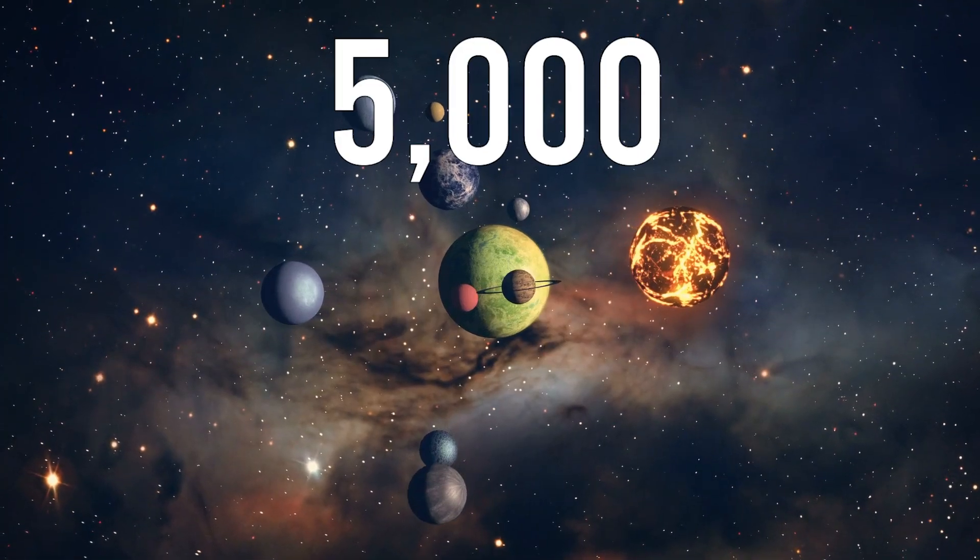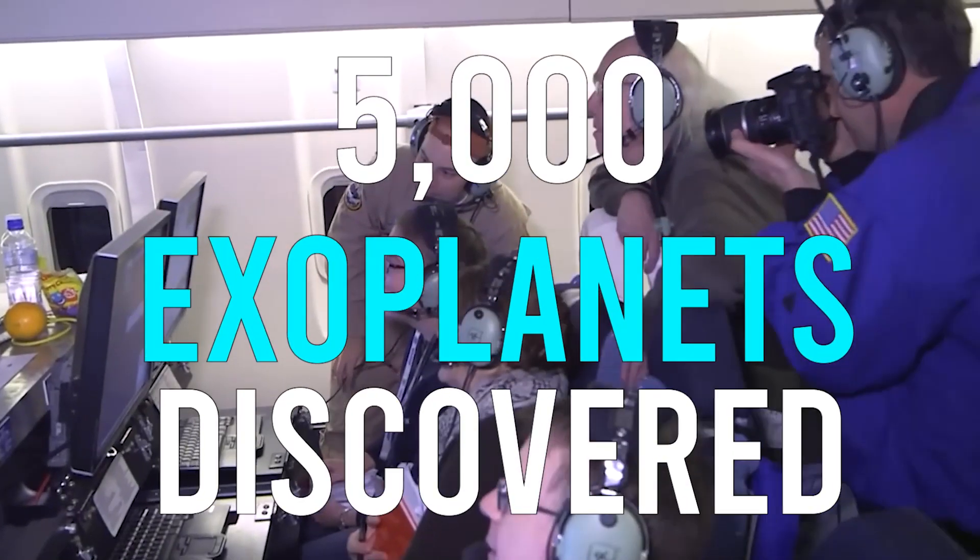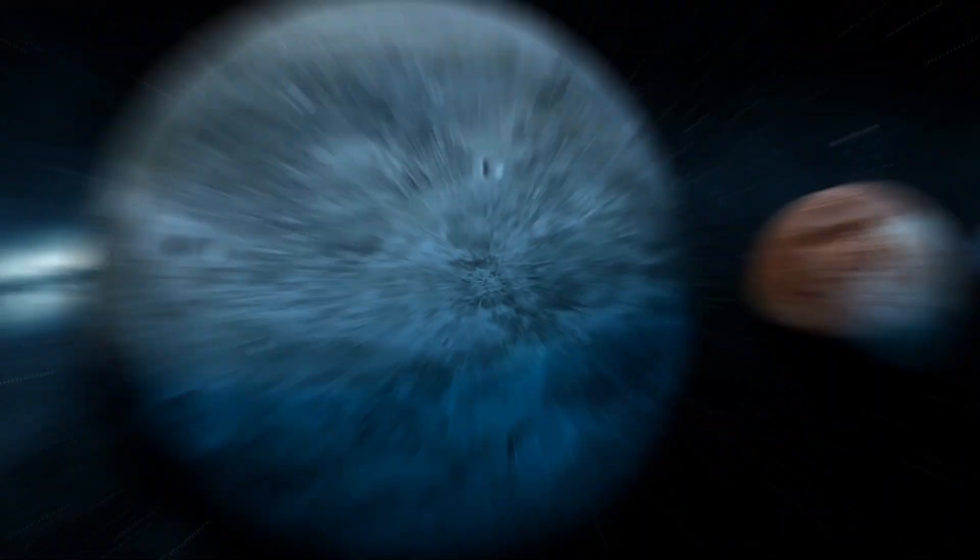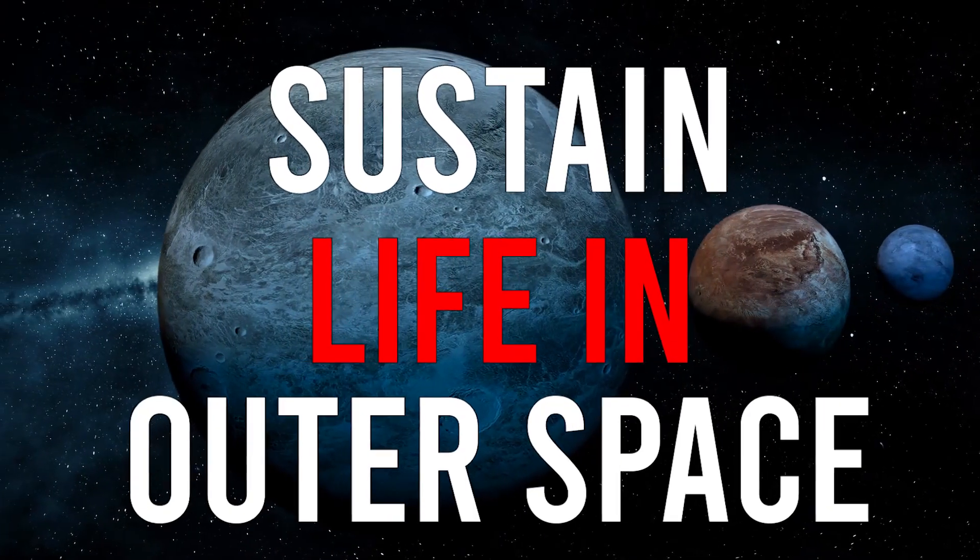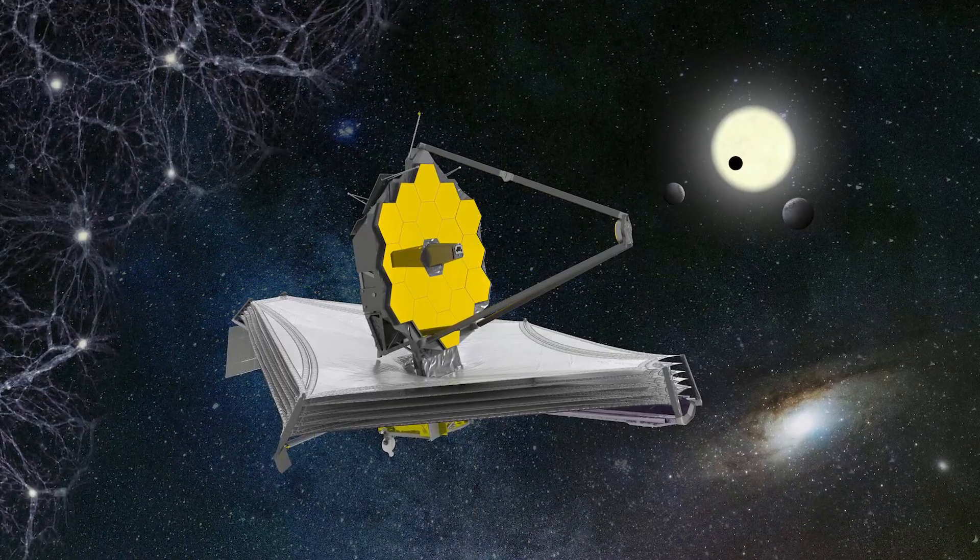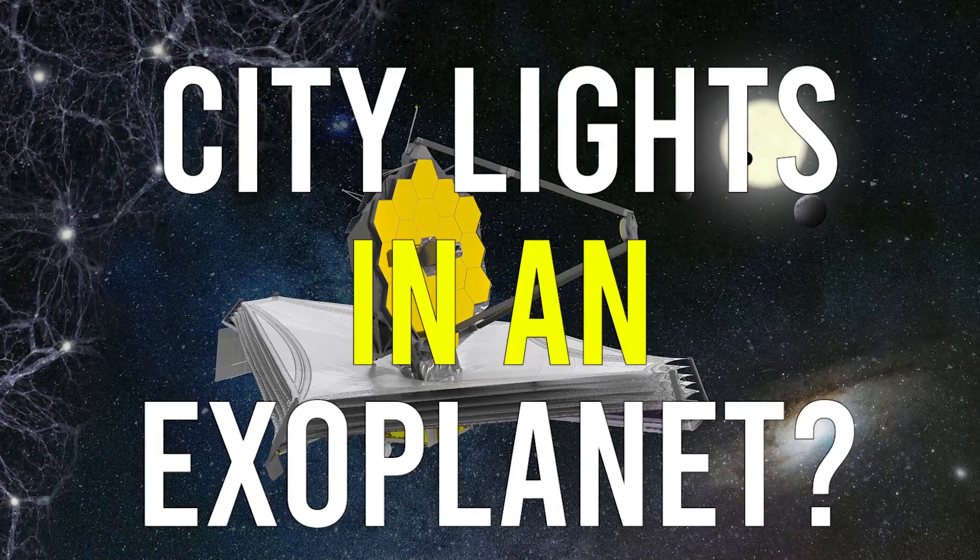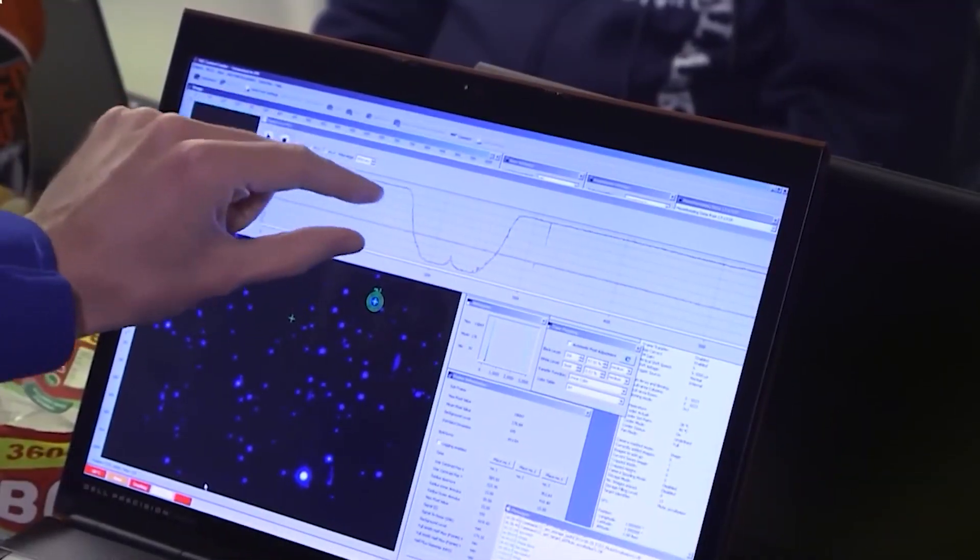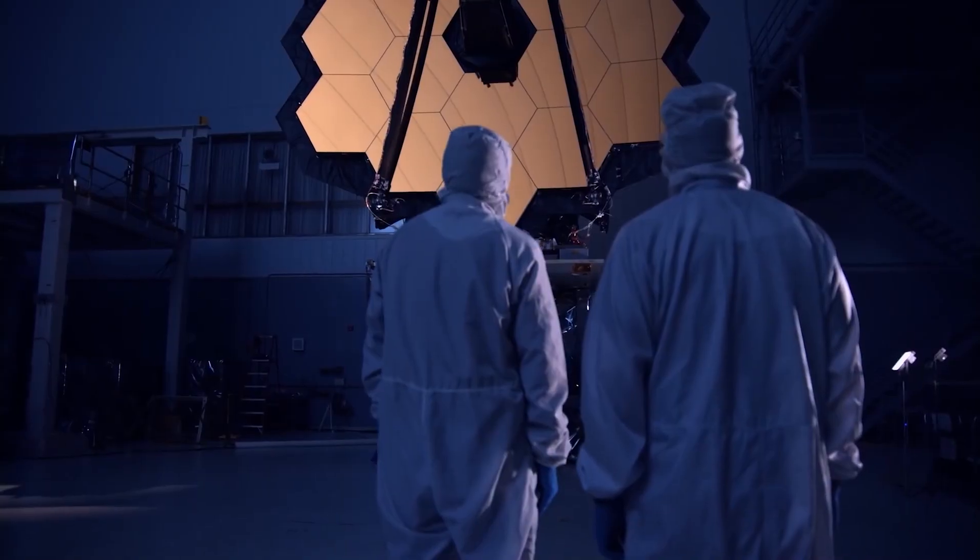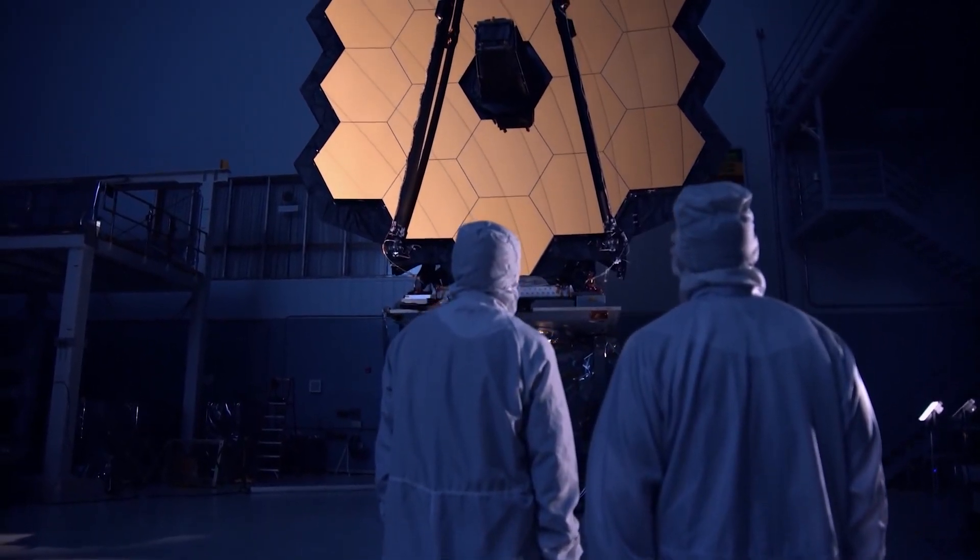As of now, there are over 5,000 exoplanets discovered, and scientists are not stopping their quest to find and sustain life in outer space. So did James Webb truly find city lights in an exoplanet? Join us as we explore Webb's discovery of city lights, which projects the future of life beyond Earth.